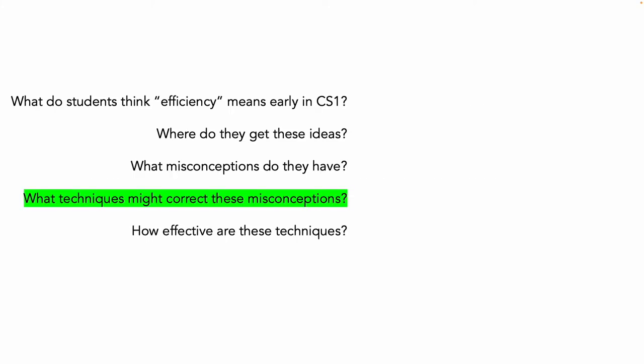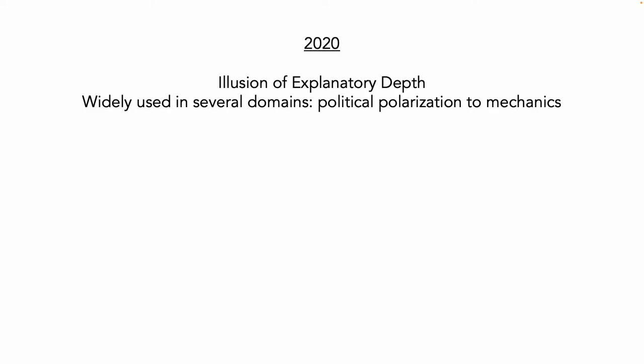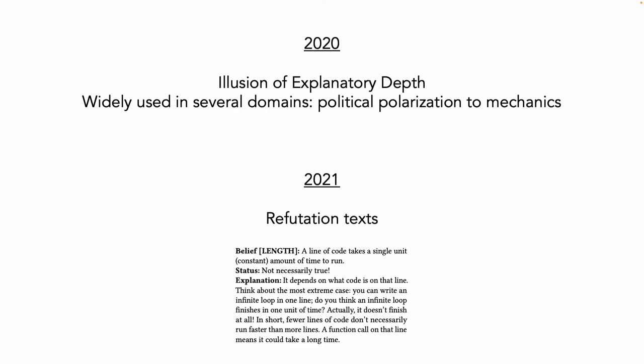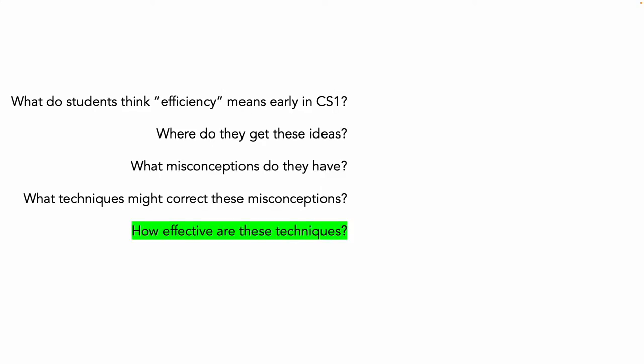So returning to our list of questions, what can we do about this? We tried two different things. In 2020, we used a technique called the illusion of explanatory depth. It's been used widely in areas ranging from reducing political polarization to helping people understand mechanical systems. In 2021, we used refutation texts. How effective were they? They weren't.